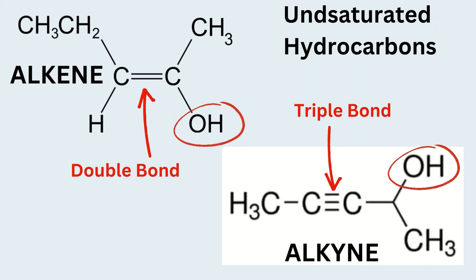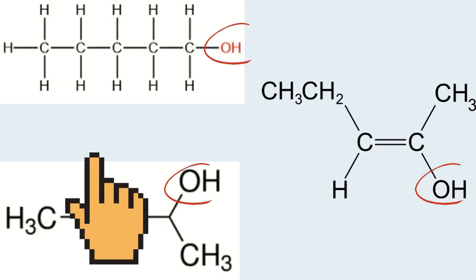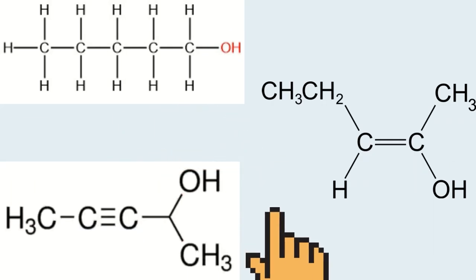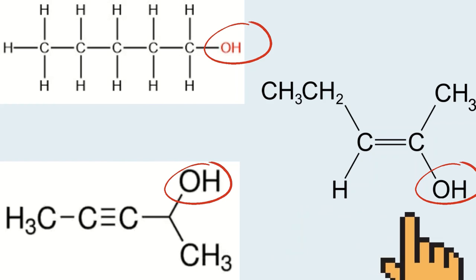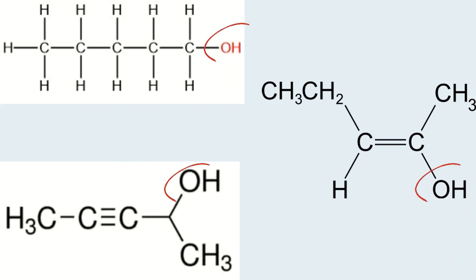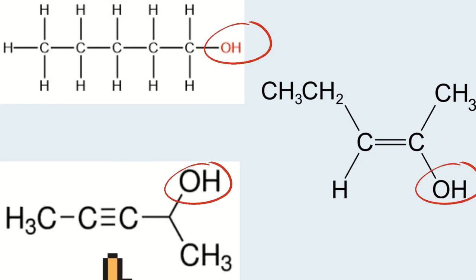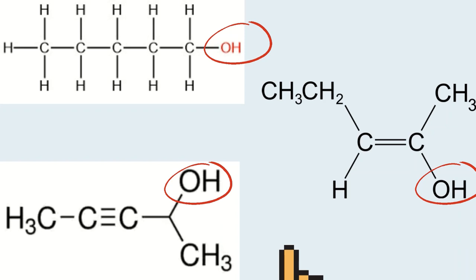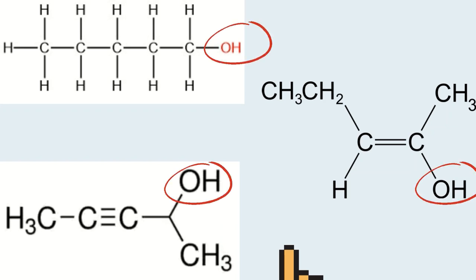The properties of compounds depend on two important factors. Number one: the presence or absence of single, double, and triple covalent bonds between the carbon atoms. This means whether the compound is saturated or unsaturated will define many of its reactions.